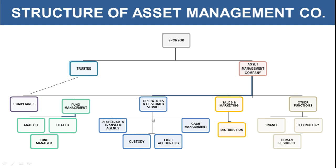Then there is the operations and customer service department, which includes RTA, custody, fund accounting, and cash management. There is also the sales and marketing department which controls distribution along with advertisement. Then there are other functions like finance, technology, and human resource. This is the whole functional structure of the asset management company, and so many roles are performed by AMC to run mutual fund operations efficiently.